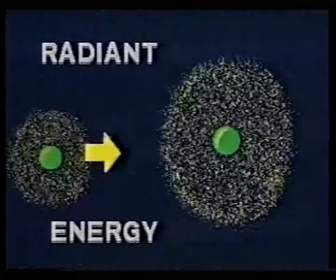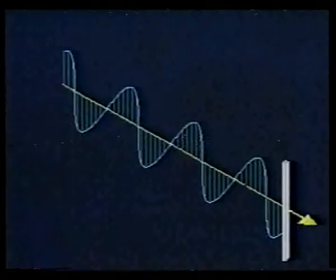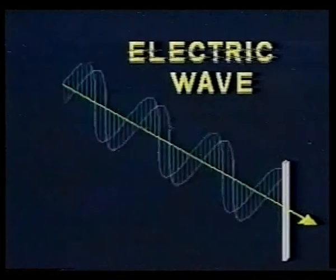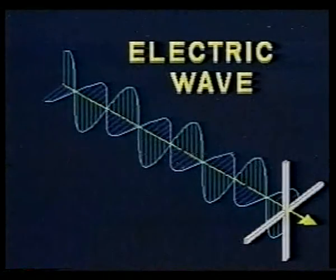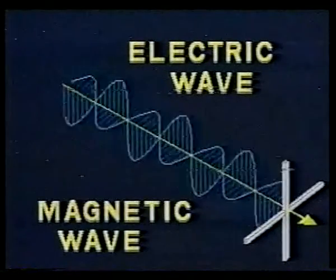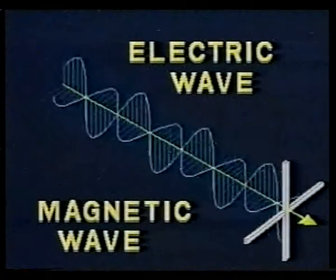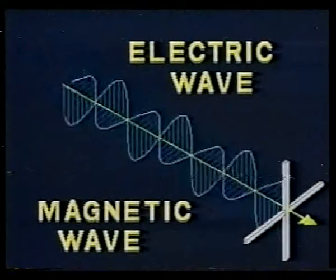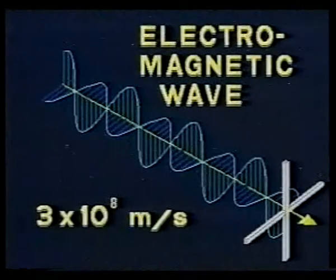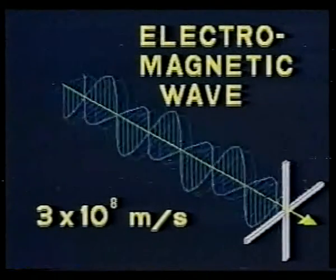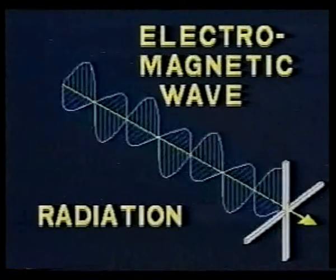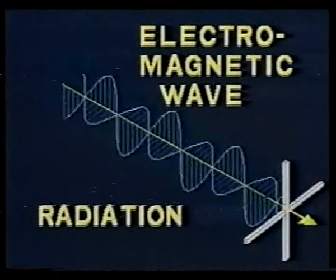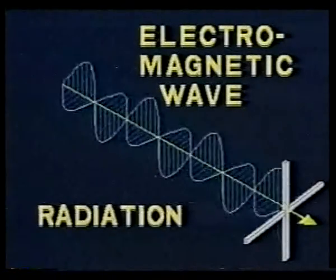Scientists developed a useful model of this radiation: the electromagnetic wave. Light behaves as an electric wave interacting with a magnetic wave, propagating through space at over 300,000 kilometers per second. This wave model explains most, but not all, behaviors of light and other forms of radiant energy.